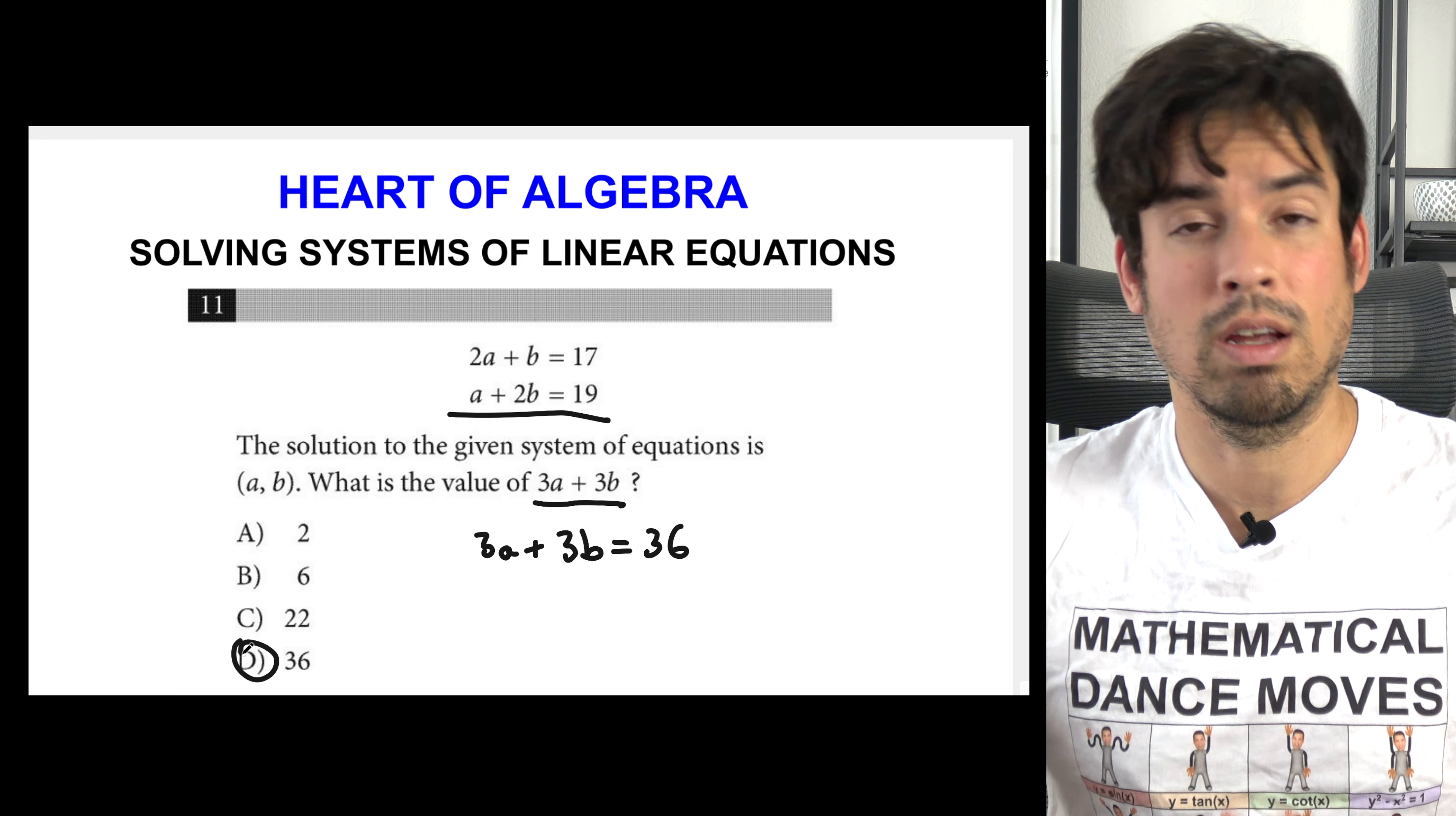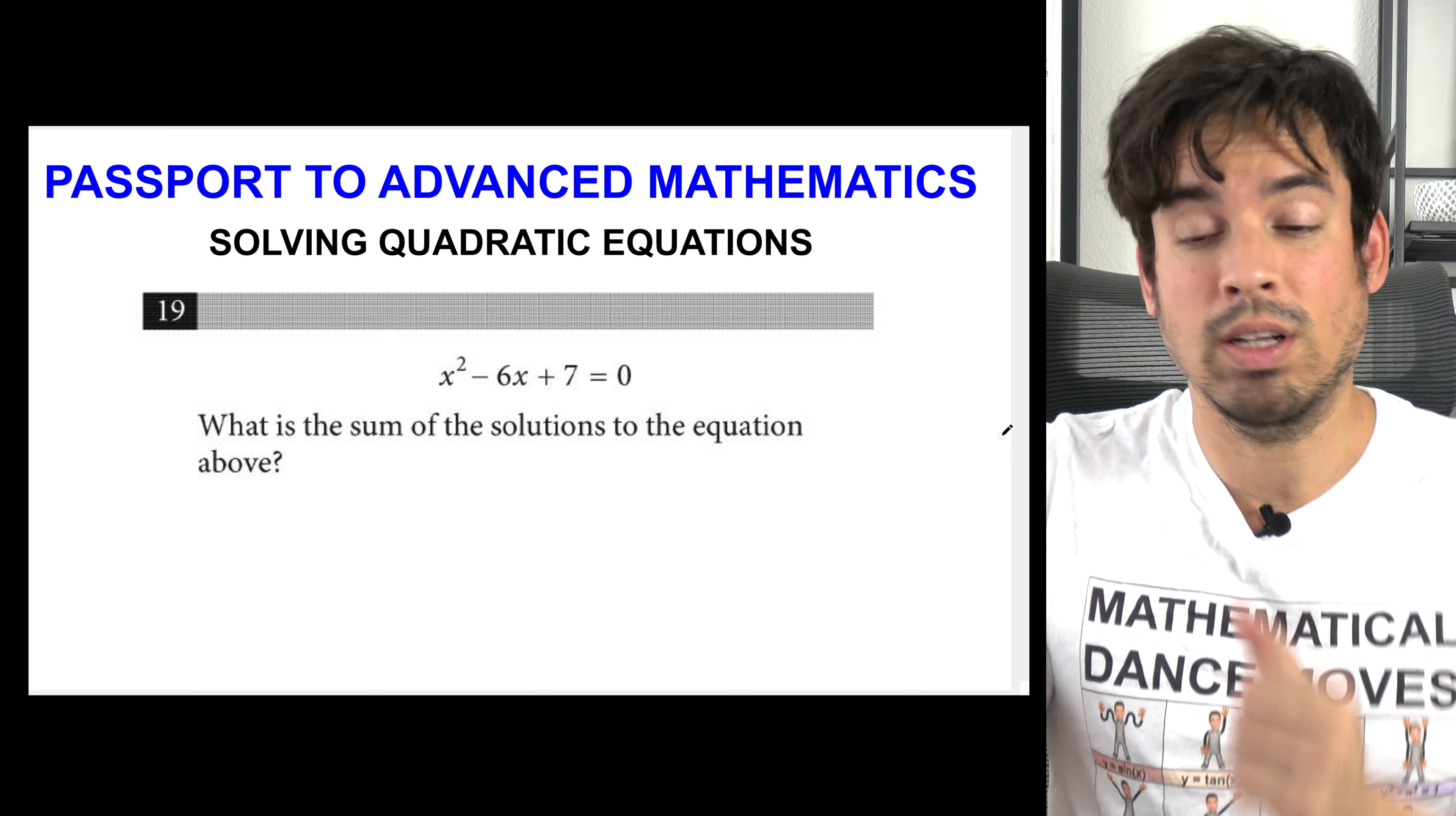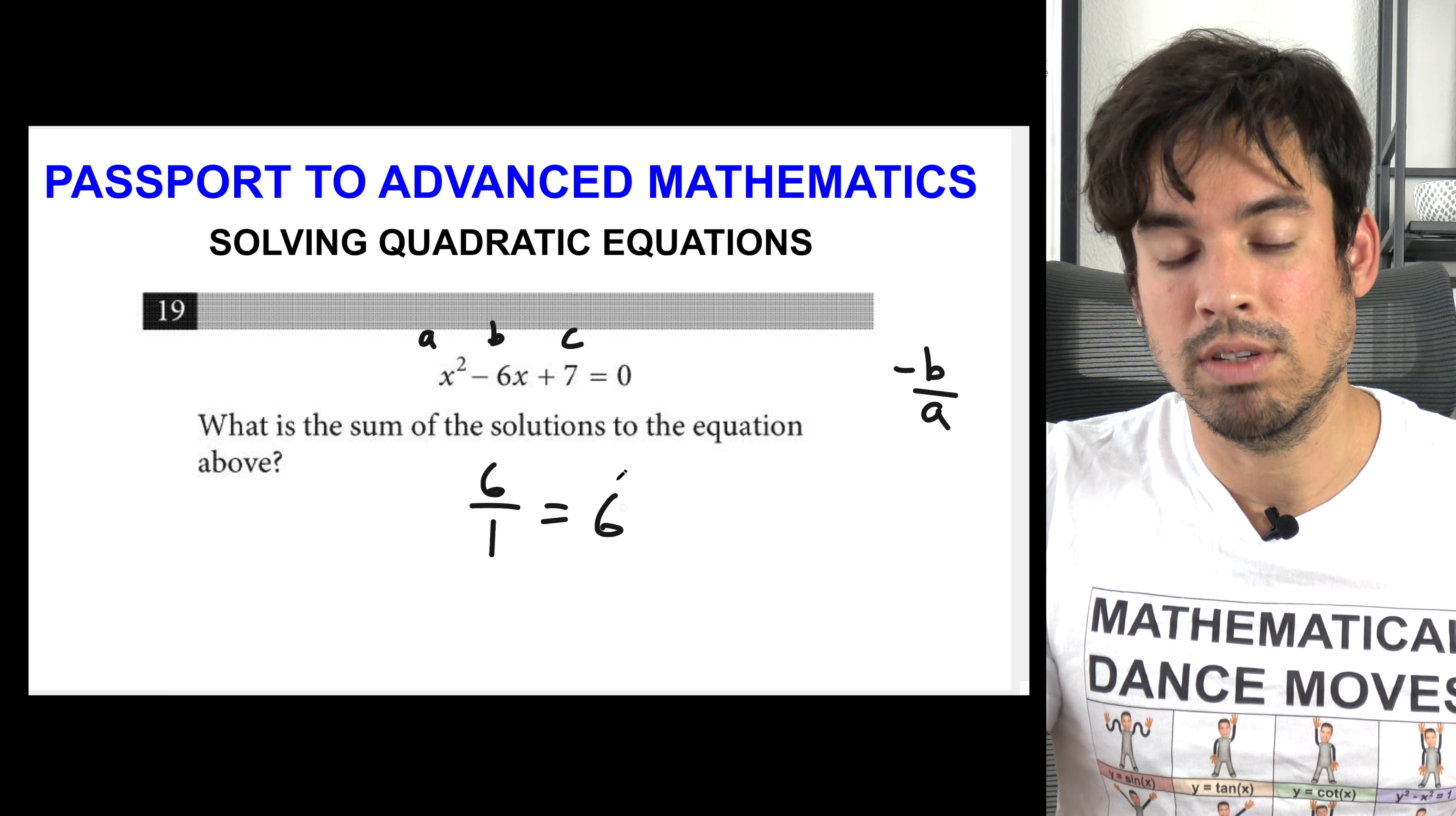Now in this one your natural instinct might be to factor and solve and that's all good, you can totally do that. But the College Board loves to ask about the sum of solutions to quadratic equations and the way they're trying to help you here is, since they ask so routinely about this, there's actually a shortcut that you can use to solve this very quickly. That shortcut is that the sum of the solutions is simply negative b over a. Well what are my a, b, and c values? Right there. So my b value is negative 6, negative b therefore would be positive 6 over a which is 1, and we get our answer of 6.